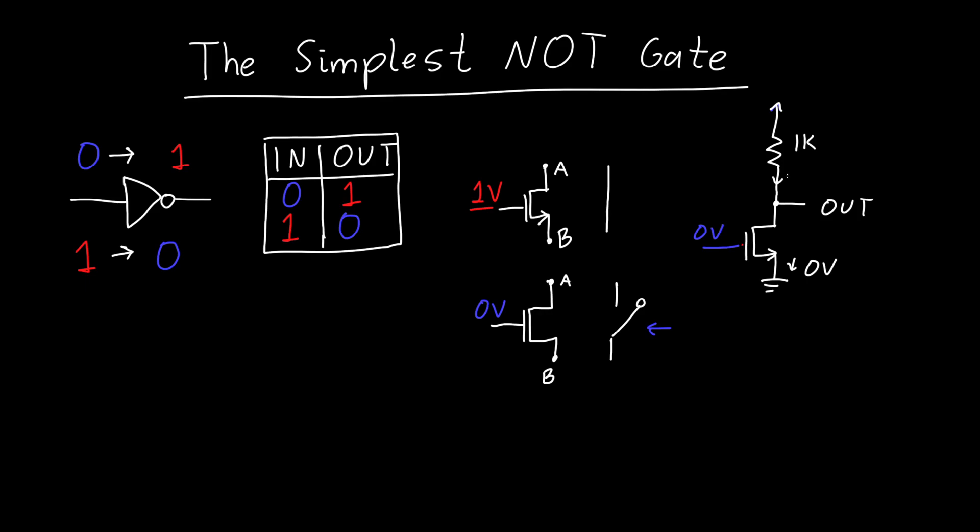the output is going to be, if this is just open circuited, the output is going to be connected to our one kilo ohm resistor. And so the output is going to be equal to one volt, or the one that we were looking for. And so this works.